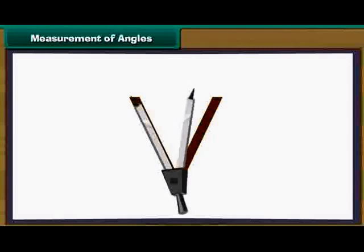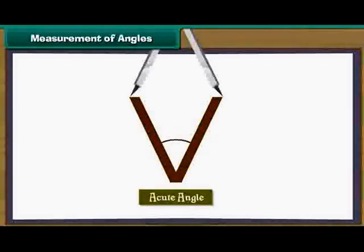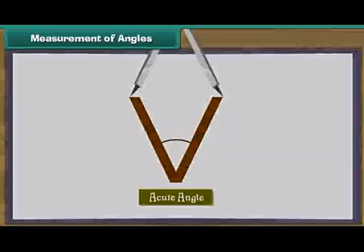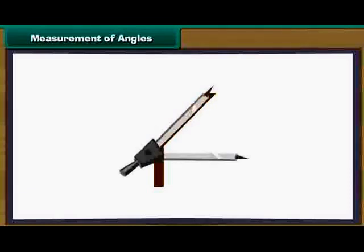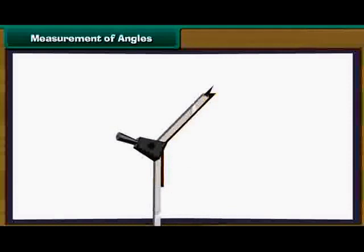Now consider the letter K of the English alphabet. Let us modify it to look like this. Place the divider on the figure such that one of its arms and common point coincide with one of the arms and common point of the figure. What do you observe? The other arm of the divider lies to the right of the other arm of the figure. It means that the figure makes an angle greater than the right angle, that is, an obtuse angle. Therefore, we can measure a right angle, an acute angle, and an obtuse angle with the help of a divider.